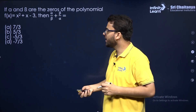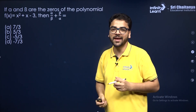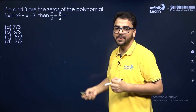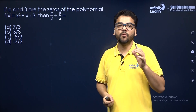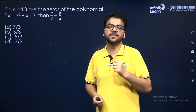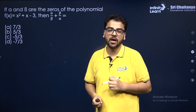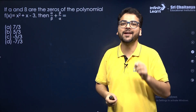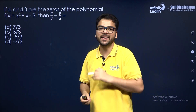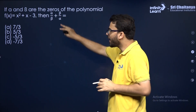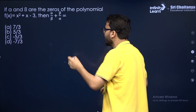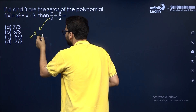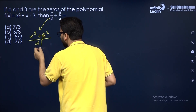Let us do one more question. You have the quadratic polynomial x² + x − 3, and you have to find the value of α/β + β/α, where α and β are the zeros. They will give you a polynomial whose zeros you cannot find directly, so you need to manipulate the expression. Taking the LCM gives (α² + β²) / (αβ).